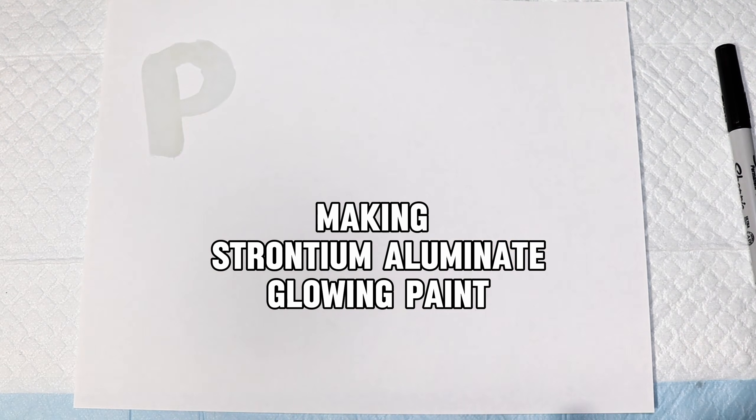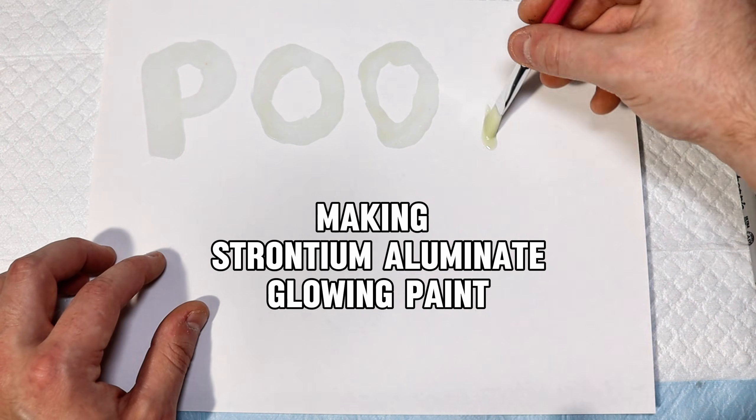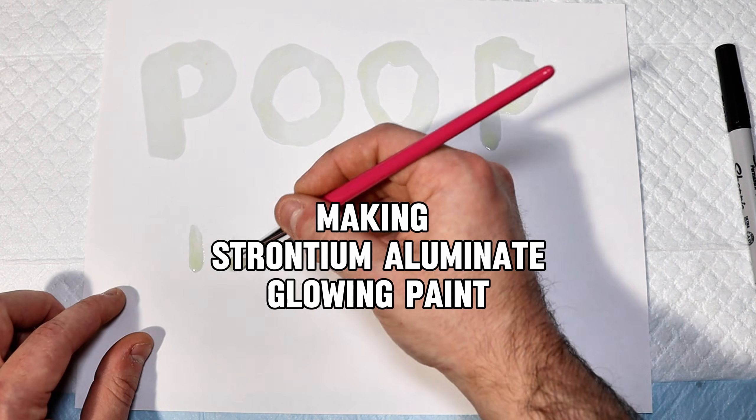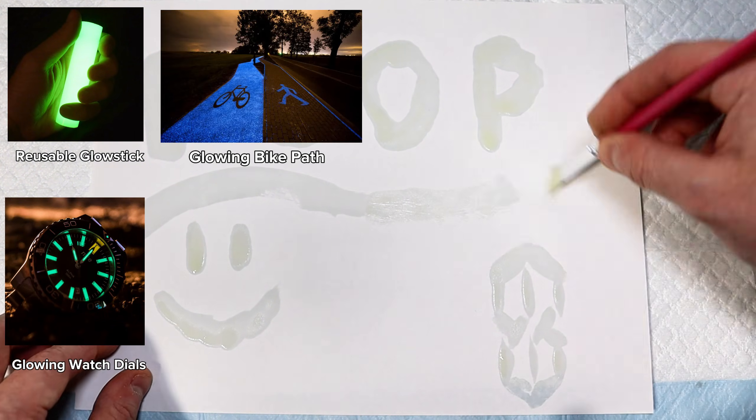Strontium aluminate is a photoluminescent phosphor with a remarkably long persistence of phosphorescence. It's used for pretty much anything you'd like to see glow in the dark, things like glow sticks, watch dials, and even this glowing bike path in Poland.